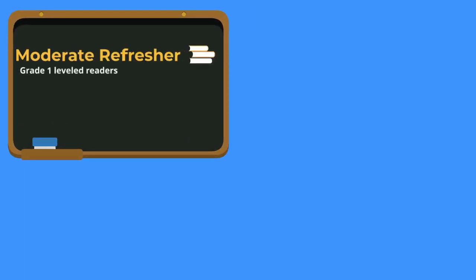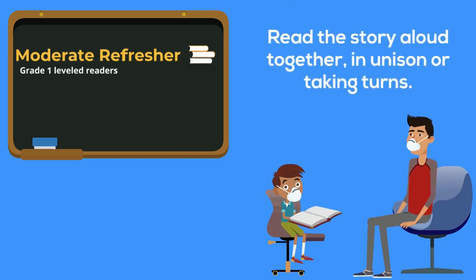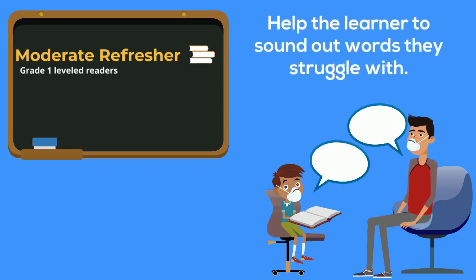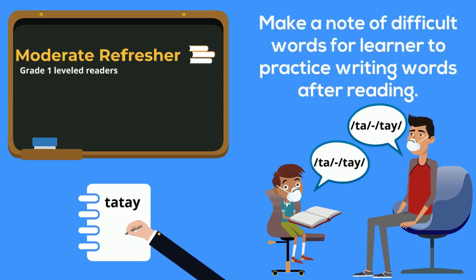Learners needing a moderate refresher should also use Grade 1 leveled readers. Read the story aloud together, either in unison or by taking turns. Help the learner sound out the words they struggle to read and take note of these difficult words. Then ask the learner to practice writing these words after you finish the story.